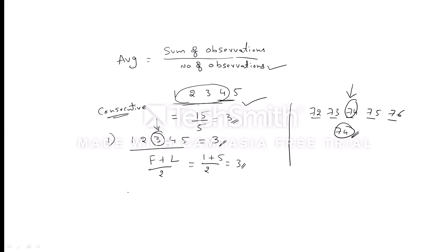Now it's not only about consecutive numbers. Consider 1, 3, 5, 7, and 9 — total 5 numbers. What will be the average? This is not in order like 1, 2, 3, 4, 5, but observe that 1, 3, 5, 7, 9 are consecutive odd numbers. Even for a consecutive odd series, the average is the middle number, which is 5. You can verify: 1 plus 3 plus 5 plus 7 plus 9 equals 25, and 25 divided by 5 is 5.